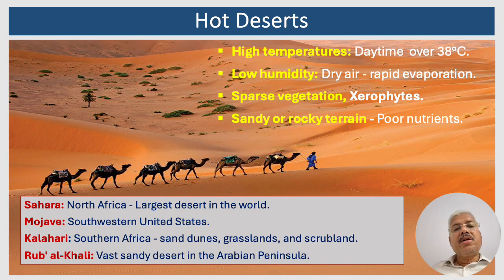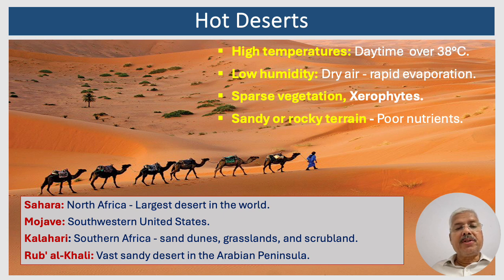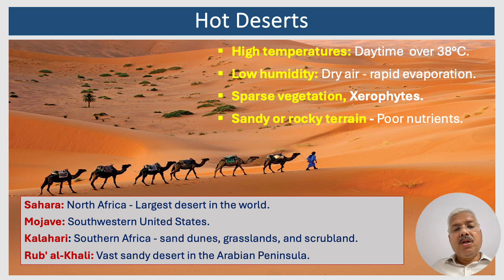Hot deserts are characterized by high temperatures and low humidity. They are often found in regions far from large bodies of water, which can help moderate temperatures. Daytime temperatures can reach well over 38 degrees Celsius, making them some of the hottest places on Earth. Hot deserts have very dry air, which can lead to rapid evaporation. Due to the lack of water, plants are often adapted to survive harsh conditions, such as cacti, succulents, and xerophytes.